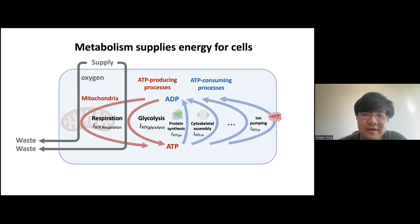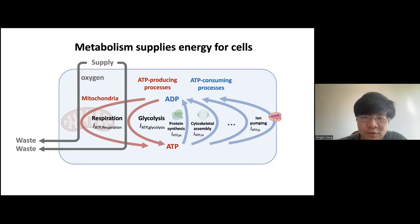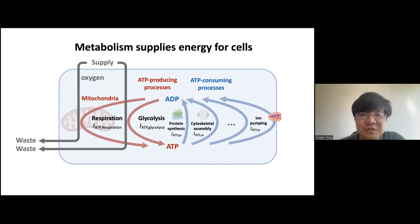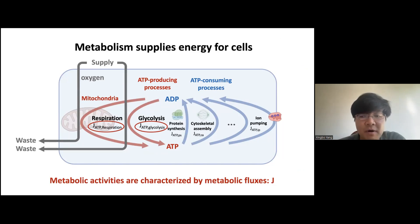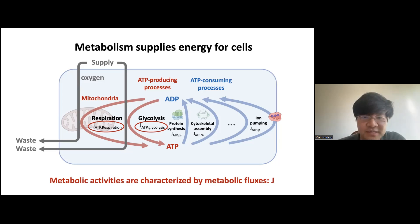There are many ATP consumers inside the cell, including protein synthesis, cytoskeletal assembly, and ion pumping, and so on. They use ATP and convert it back to ADP, completing the cycle. Metabolic activities are characterized by the metabolic fluxes of those pathways, which can be understood as the rate of turnover of a molecule such as ATP.